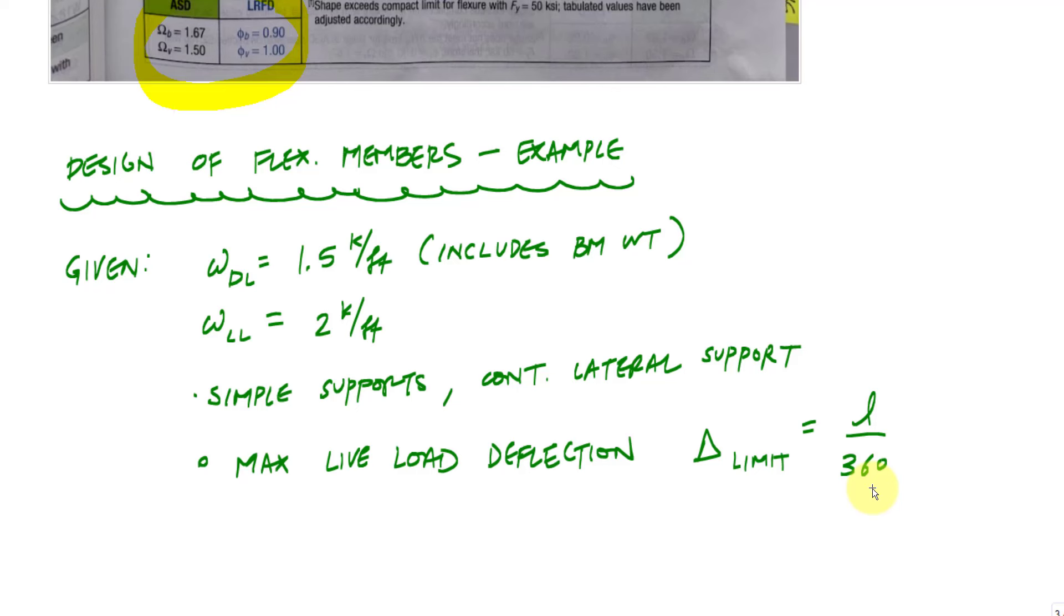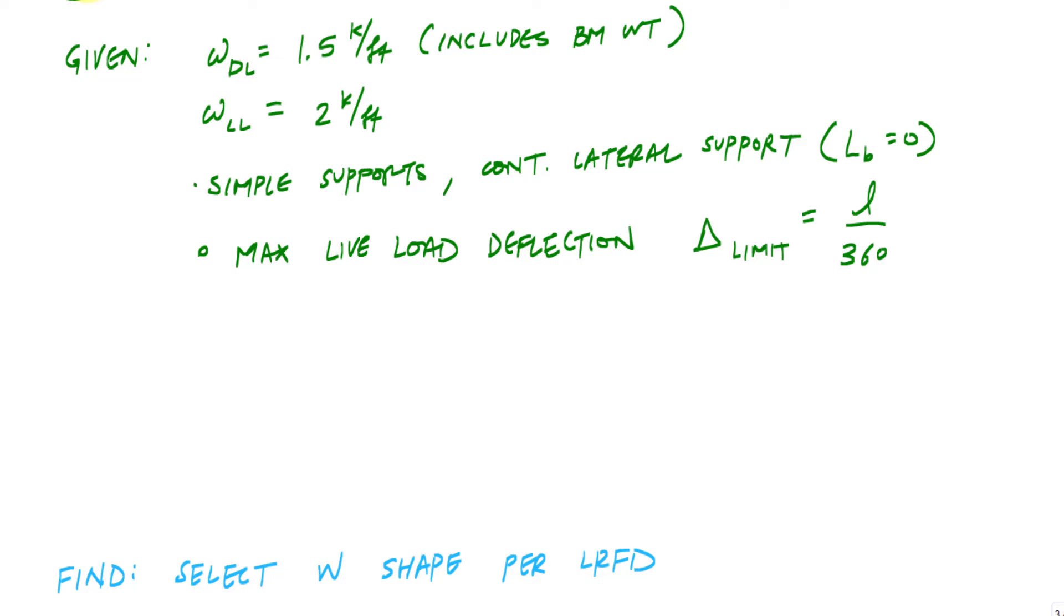We're going to do an example designing flexural members. This will be a case where we have a uniformly distributed load. The dead load is 1.5 kip per foot. Just to keep things simple, we're going to say that includes the beam weight. And then we've got a live load of two kip per foot. We'll say it's on simple support, a simply supported beam with continuous lateral support. That means the unbraced length is zero. We'll also have a maximum live load deflection less than or equal to L over 360.